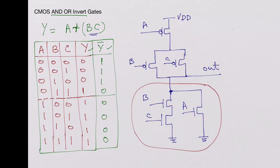So now if you look at this function you would get exactly Y-bar. Let's look at it. When A is high, this device is ON, so the output will be pulled to low.